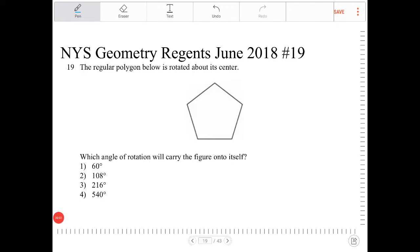The regular polygon below is rotated about its center. Which angle of rotation will carry the figure onto itself?